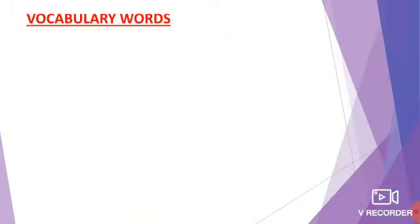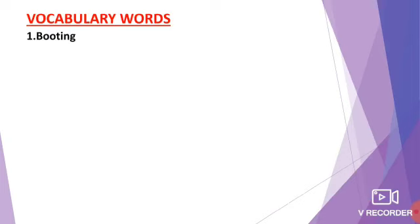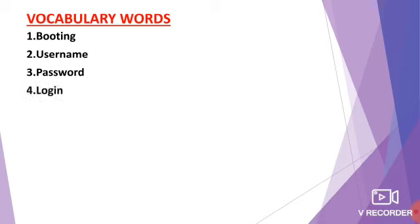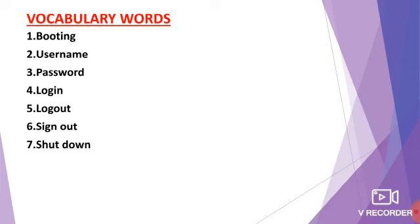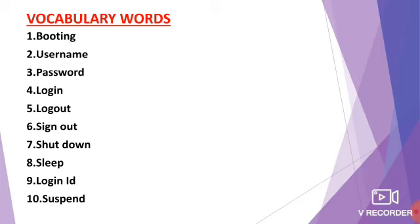Have you all understood, children? Yes. Now we are moving to the vocabulary words. First, we have booting — B-O-O-T-I-N-G. Next, username — U-S-E-R-N-A-M-E. Next, password — P-A-S-S-W-O-R-D. Next, login — L-O-G-I-N. Next, logout — L-O-G-O-U-T. Next, signout — S-I-G-N-O-U-T. Next, shutdown — S-H-U-T-D-O-W-N. Next, sleep — S-L-E-E-P. Next, login ID — L-O-G-I-N I-D. Next, suspend — S-U-S-P-E-N-D. Read and practice these vocabulary words.